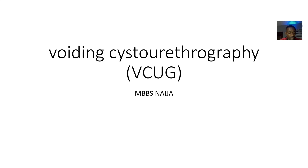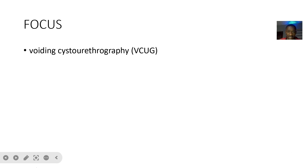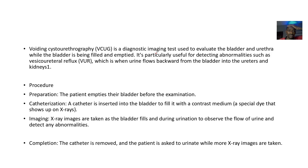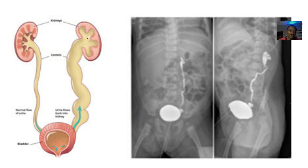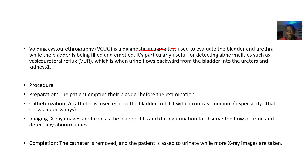The next diagnostic modality for urinary tract problems is the voiding cystourethrogram, also called the VCUG. It is a diagnostic imaging test used to evaluate the bladder and urethra while the bladder is being filled and emptied — imaging these structures both while filled and as the patient is emptying.